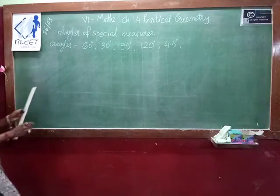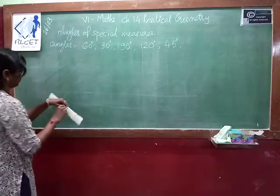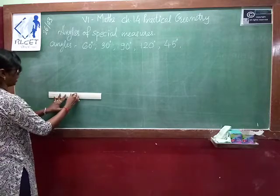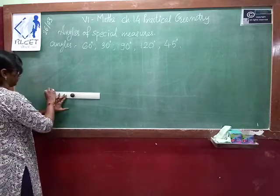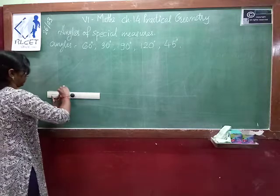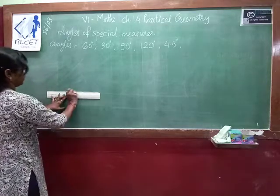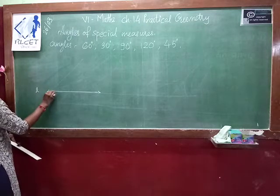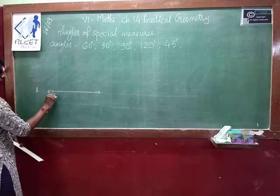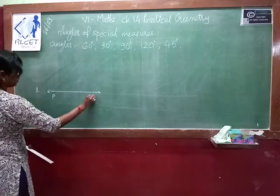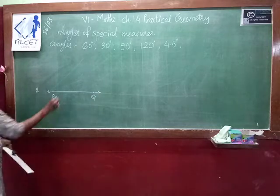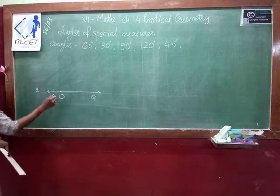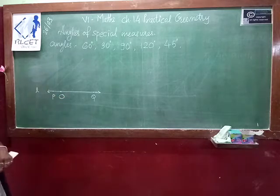First we draw 60 degrees. For that, first we draw a line. Name this line as L. This is your point P, and this is your line PQ. You take one point on this line O, where we have to draw the 60 degree angle.